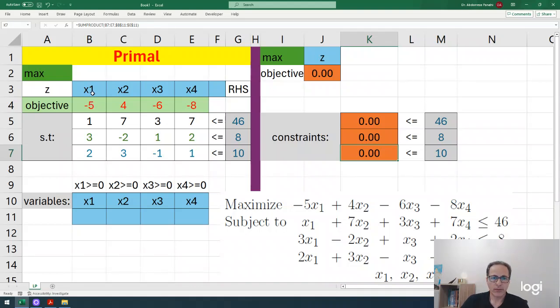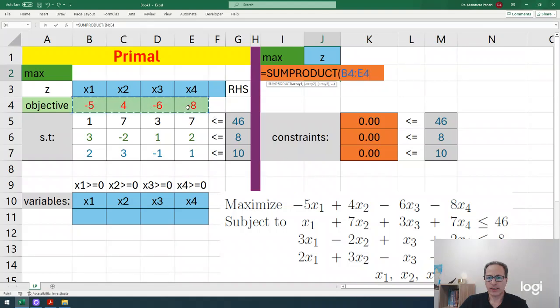For the objective, we multiply minus 5x1, 4x2, minus 6x3, minus 8x4 and add them up. We have a formula for this: sum of products, called SUMPRODUCT. I write equals SUMPRODUCT and double-click. We need two arrays: the cost coefficients and the variables. I select them separated by comma. We don't need to do anything else because we won't use this formula anywhere else.